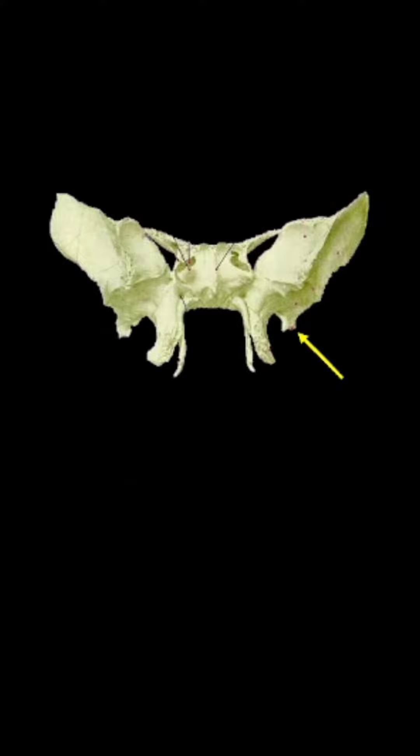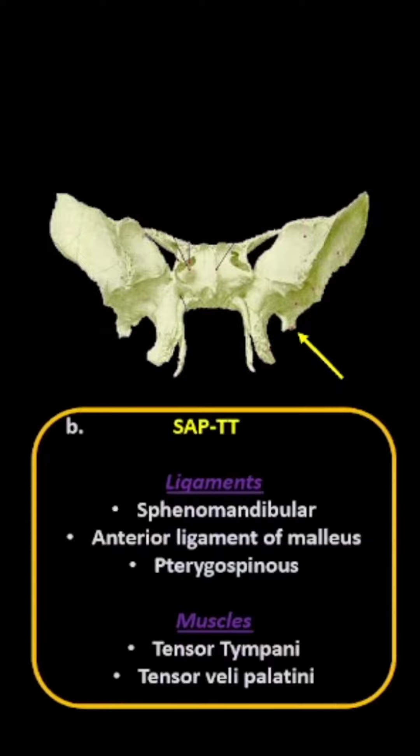Let's see the structures attached to the pointed part. You can remember with the mnemonic SAPTT. That means there are three ligaments and two muscles. The SAP stands for the ligaments.